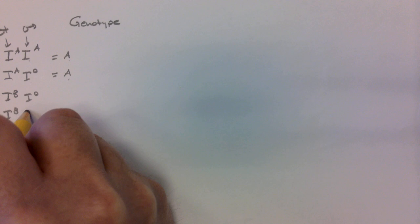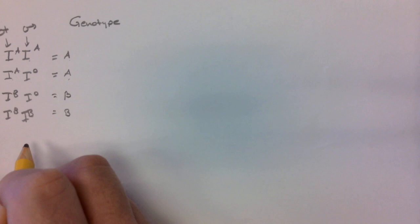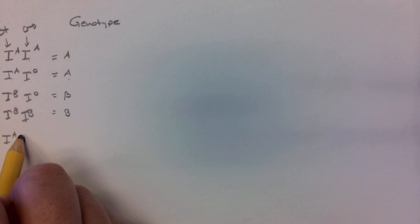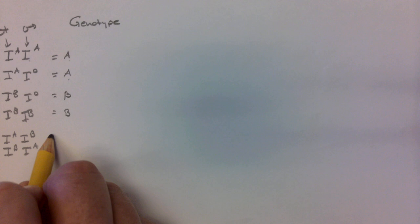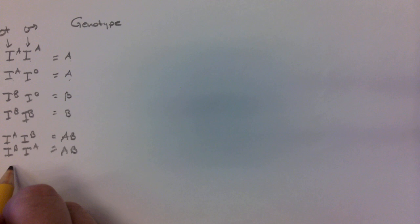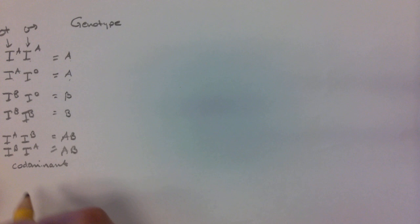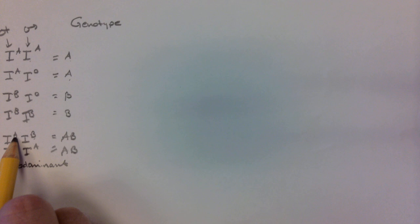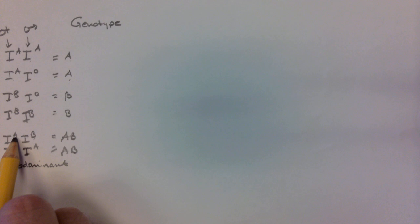For type B, the genotypes IB-IB or IB-IO give type B blood. When we have IA and IB — or the reverse — we get AB blood. Why does this happen? It's because of genetic co-dominance. B and A are both dominant alleles. Type O is recessive. And if we have IO and IO, that gives us type O — that's the only way to get type O.